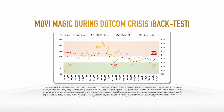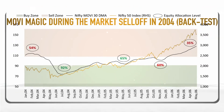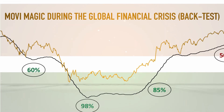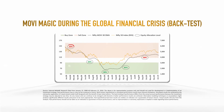Could you have done this? During the global financial crisis, the model suggests that investors should have increased equity allocation from 35% to 98% when markets corrected, and reduced the allocation to 50% as markets recovered. Could you have done this?